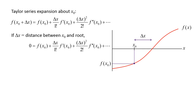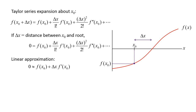Unfortunately, since there are an infinite number of terms in the Taylor series expansion, this is not possible. To simplify the equation, we will employ a linear approximation to the Taylor series, discarding terms with delta x squared and higher.